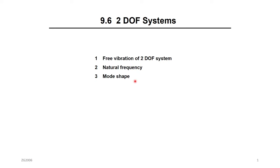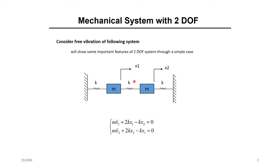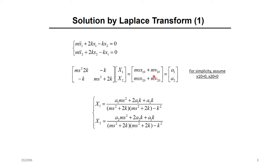We will talk about it more physically here since this is an engineering course. Our system has two masses — a very simple two degree of freedom system — connected between them by springs and connected to both walls. We have x1 and x2. These are the equations of motion for x1 and x2 — two equations of motion. We want to derive the eigenvectors and eigenvalues, which are the natural frequencies and the mode shapes. We need initial conditions because this is free vibration — either initial displacement or initial velocity.